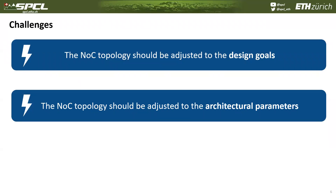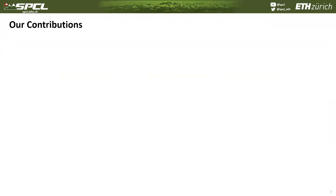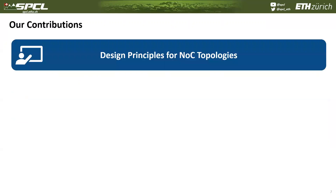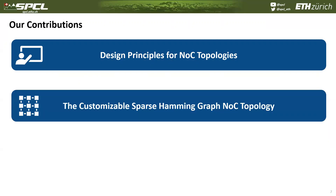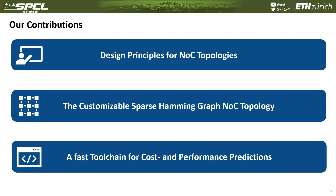In our project, we want to tackle these two challenges. We do this by providing three different contributions: we derived design principles for network on chip topologies; based on these principles, we propose the customizable Sparse HemmingGraph topology, which comes with an adjustable cost-performance trade-off; and to perform the customization of this topology, we developed a fast toolchain for cost and performance predictions.